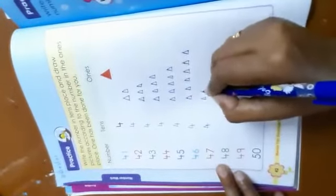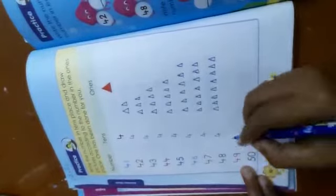4 tens, 7 ones. 4, 1, 2, 3, 4, 5, 6, 7. 4 tens and 8 ones. 4 tens, 1, 2, 3, 4, 5, 6, 7, 8. 4 tens and 9 ones.